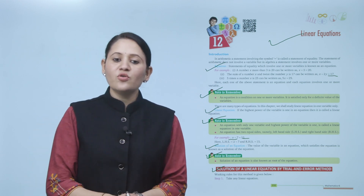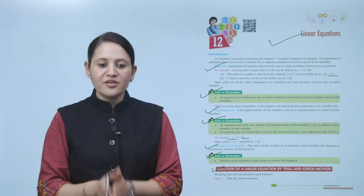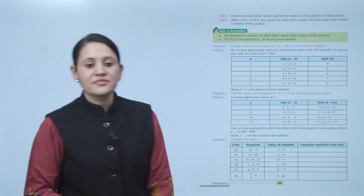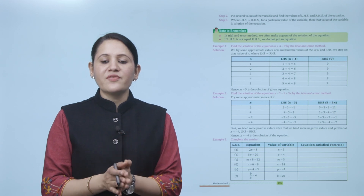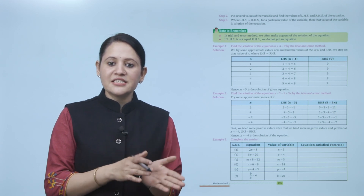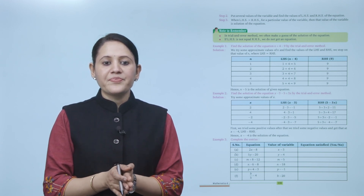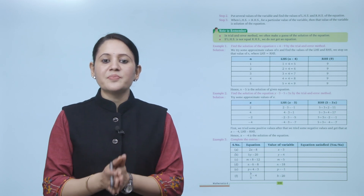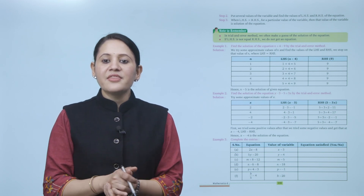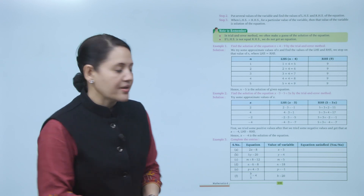The working rules for the trial and error method are: first, take any linear equation. Then put several values of the variable to find the values of LHS and RHS of the equation. When LHS equals RHS for a particular value of the variable, then that value is the solution of the equation.